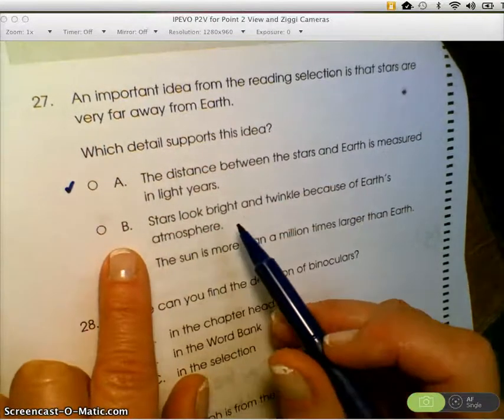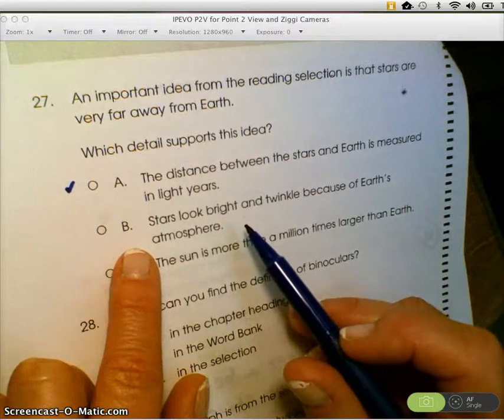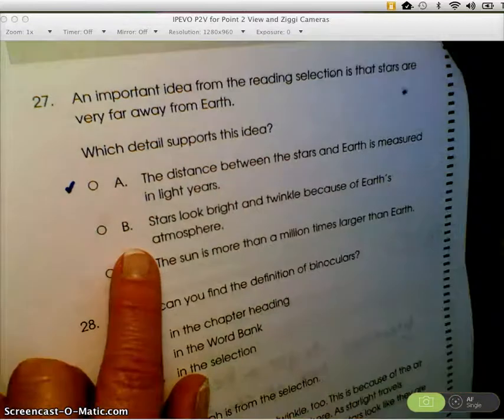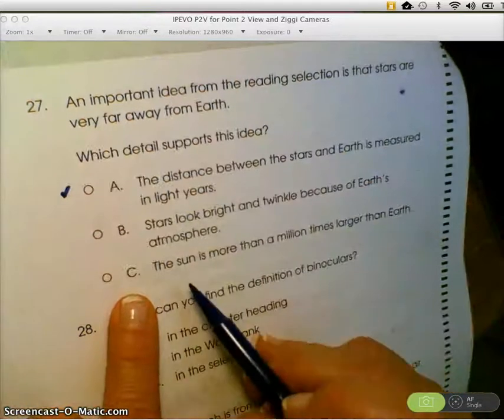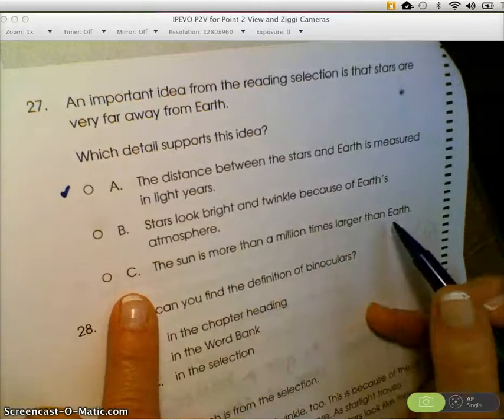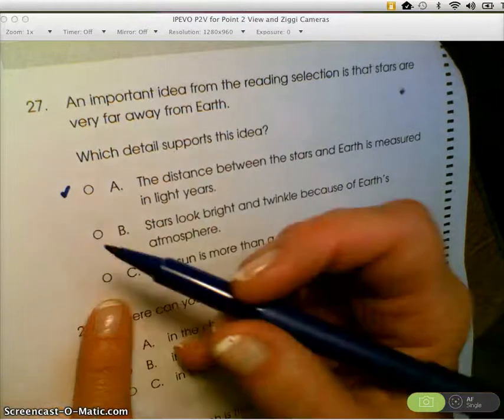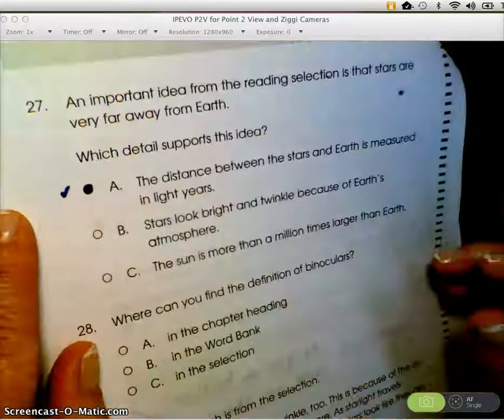B, stars look bright and twinkle because of Earth's atmosphere. Does that tell me about the fact that stars are far away from the Earth? No, that's about them looking bright and twinkly. Nope, that one doesn't work. It's a dud. C, the sun is more than a million times larger than the Earth. Does that talk about the distance and how far it is from Earth? Not at all. Another dud. So this is my beauty. 27a.